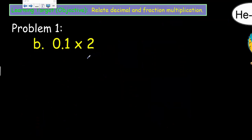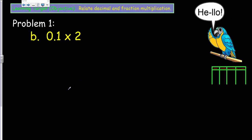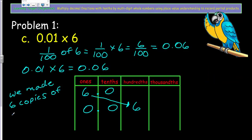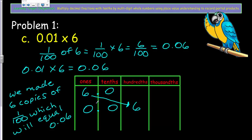Let's take one tenth of two. Go ahead and try this one on your own and then I'll show the result. Here's all the work — I hope you tried it on your own. For the next example: six copies of one hundredth equals six hundredths. The digit six shifted two place values to the right, because we're talking about two powers of ten here.